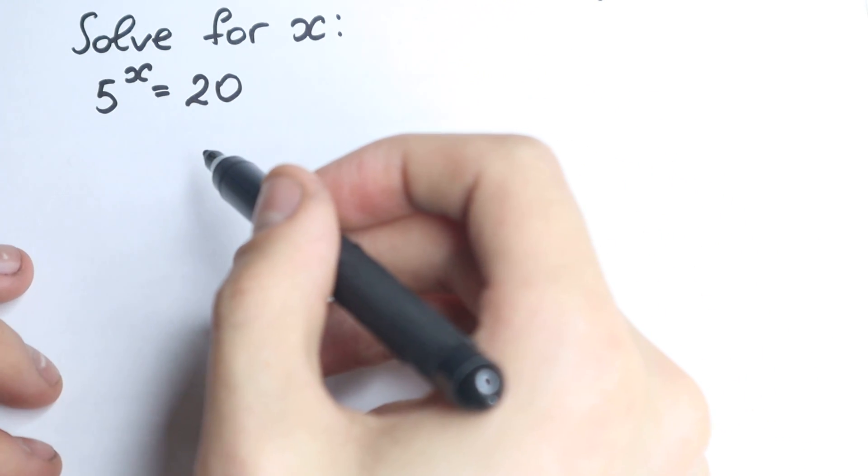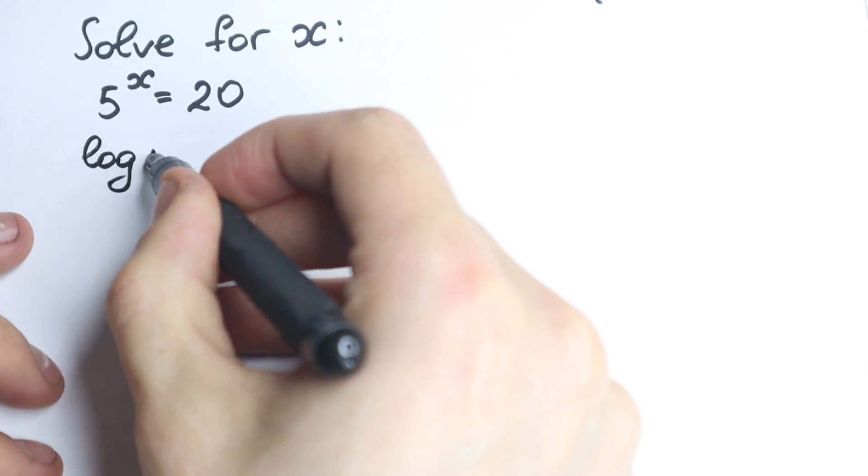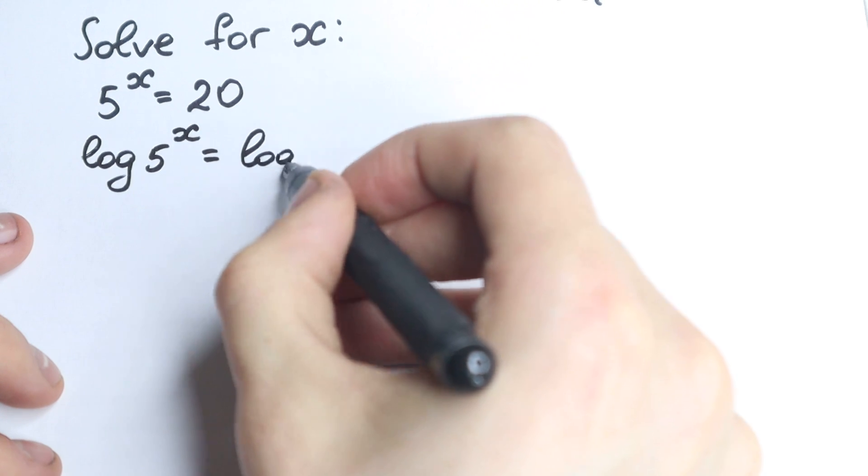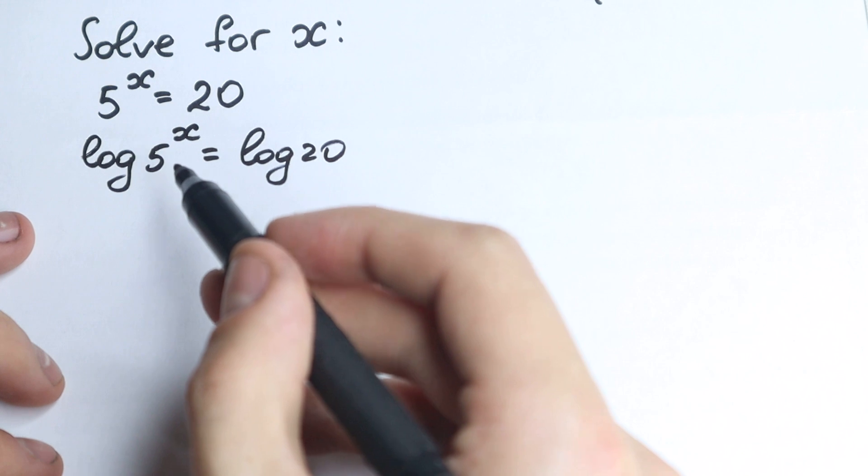First of all, we need to know about log. If we apply log on both sides, take a look closely. We have log 5 to the x on the left-hand side equal to log of 20. So we have log on both sides. Nothing hard, just we need to know about log.